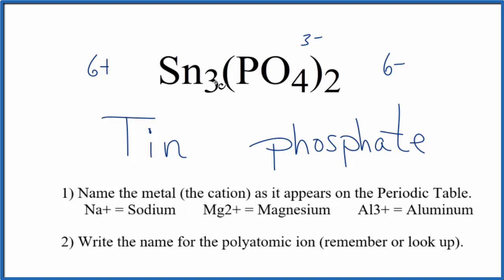Three times something gives us 6+. Three times 2+, that would be 6+. So we're going to write two in Roman numerals between the tin and the phosphate, and then put parentheses around it.